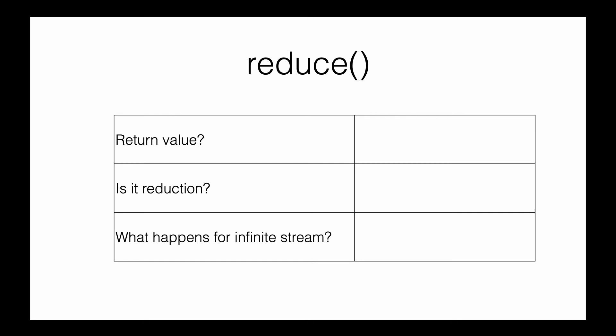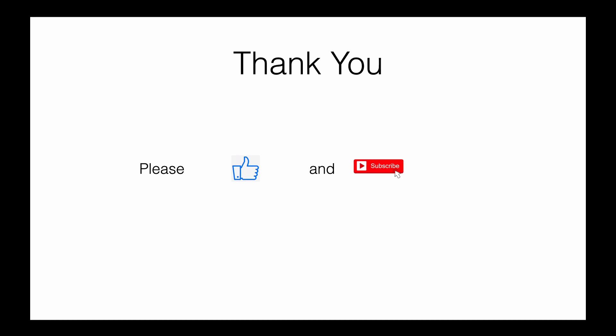Back to the slides: the return value of reduce varies depending on your requirement — it could be Integer for a sum, Double for an average, or String as we saw. Is it a reduction? Yes, since we go through all elements from first to last and reduce them to one value. What happens with an infinite stream? The reduce method does not terminate an infinite stream. That's all for reduce. Hit the like button if you enjoyed the video. In the next video we'll discuss the last terminal operation: collect. Until next time, bye bye.